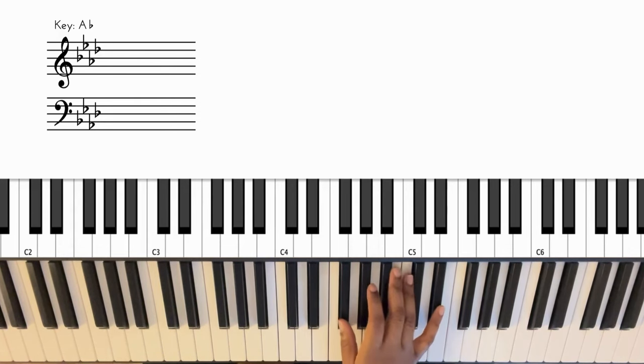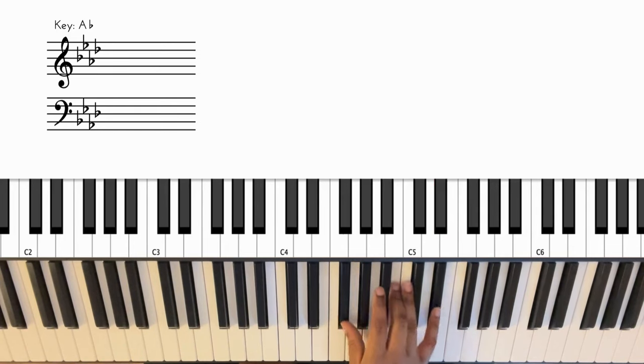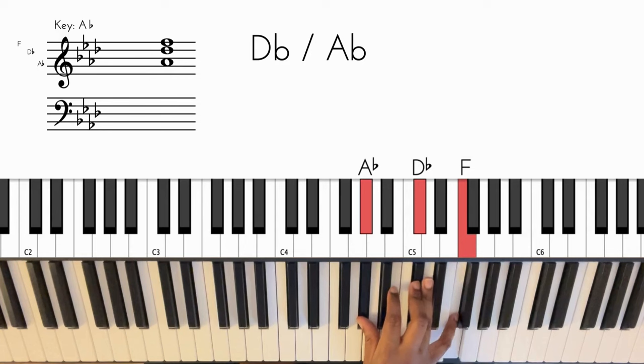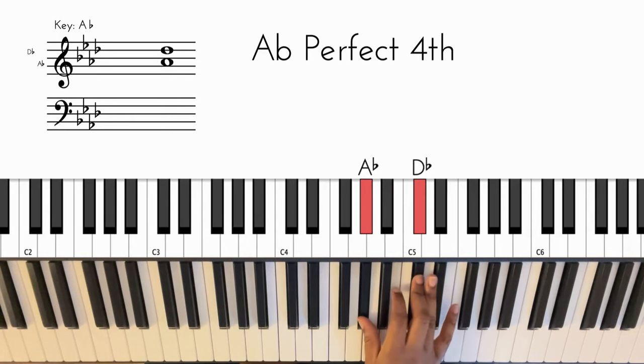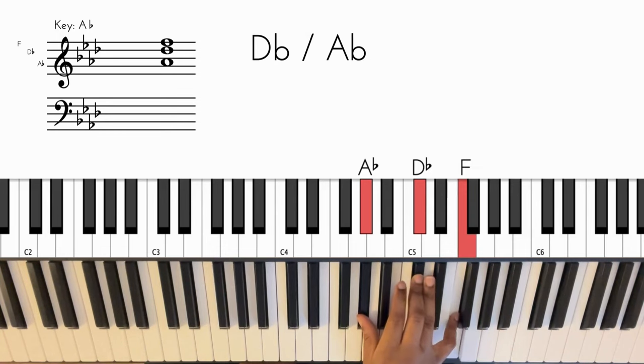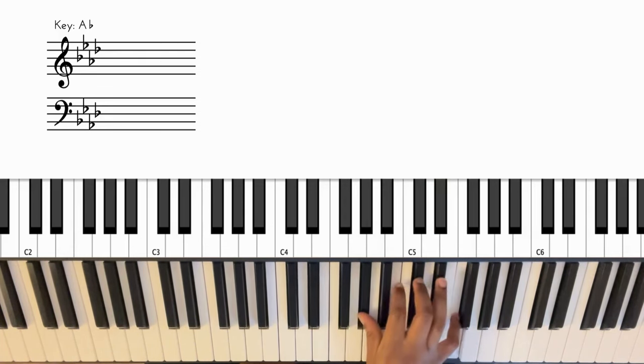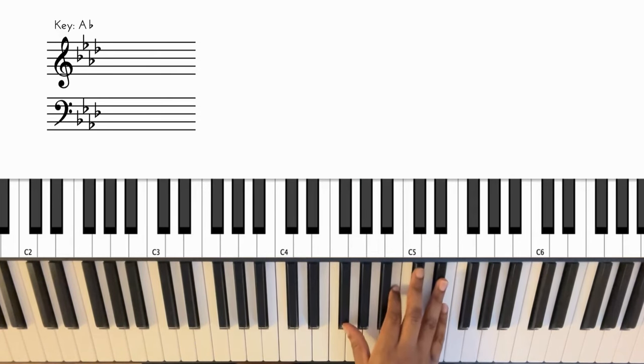B and E flat. B flat. And then we move it up a whole step, A flat, D flat or C sharp, and F. And then we go right back to that B chord again, so right back to back.